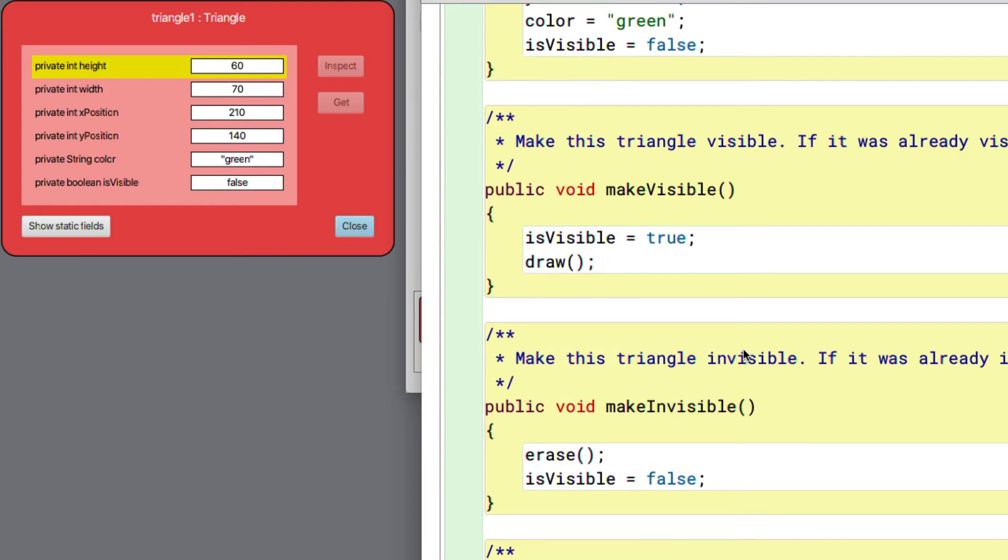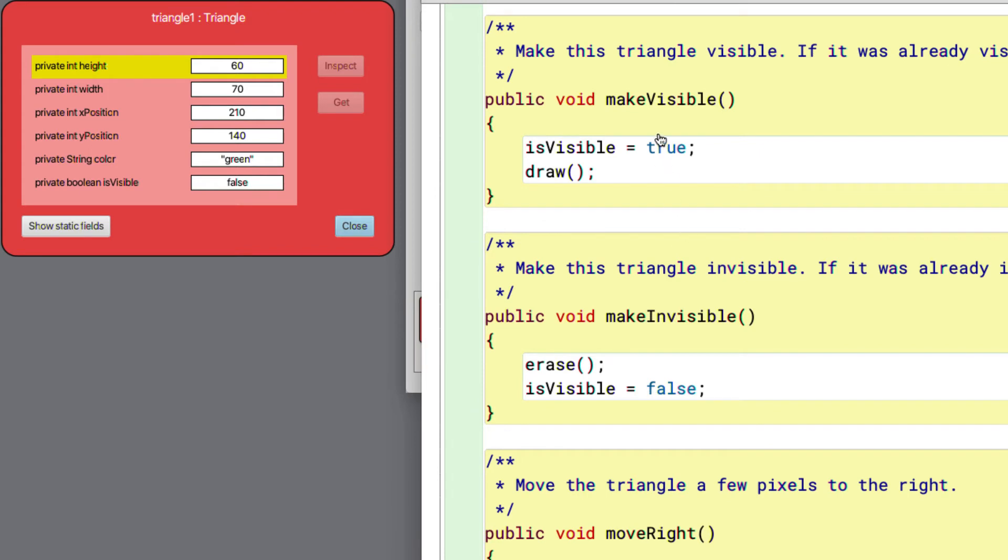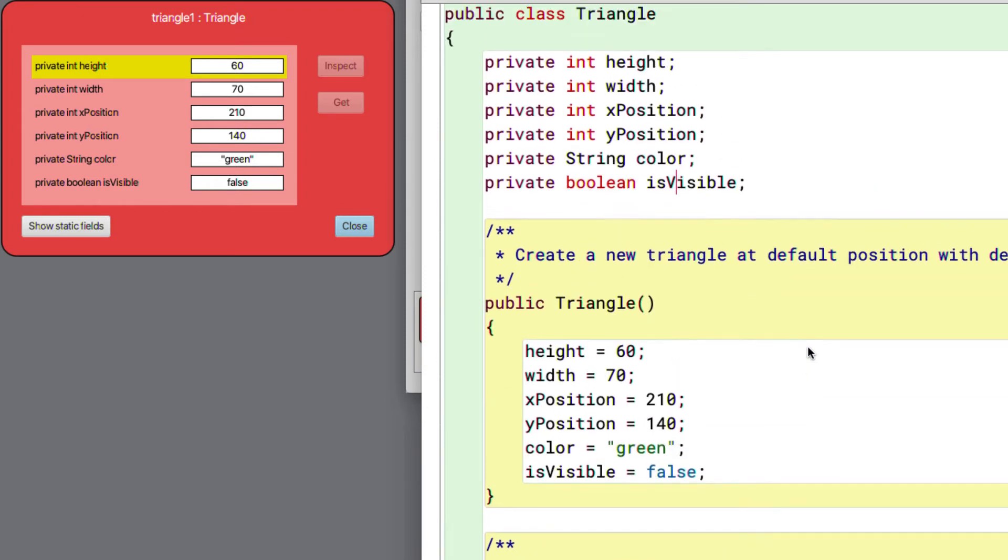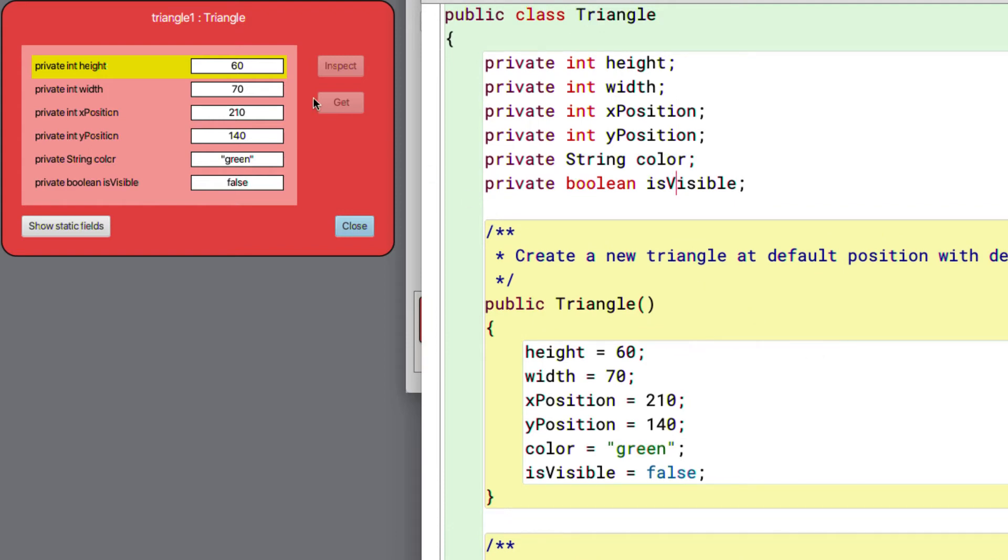And if we look further down within the source code we can see some of the methods that we've already been invoking on triangle objects prior to this point. So it's the source code that we've written for the triangle class that causes these particular data features of an object to exist.